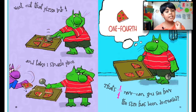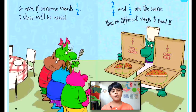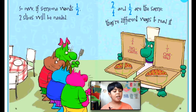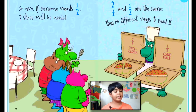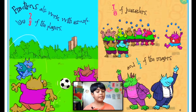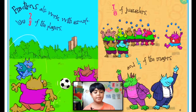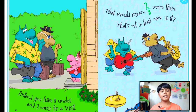Next, cut the pizza into four and take one single piece — that's one-fourth. Now can you see how the size has been decreased? So if someone wants one-half, two slices will be needed. Two-fourths and one-half are the same. Fractions also work with groups, like two-thirds of the players, seven-eighths of jugglers, and one-half of the mayors. Pretend you have three uncles and two came for a visit — that would mean two-thirds were there.